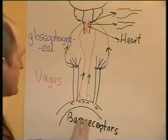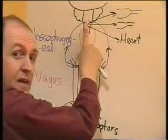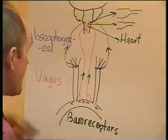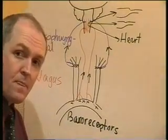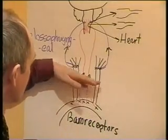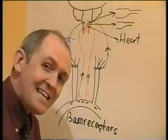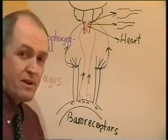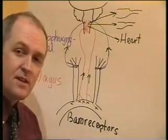When the blood pressure is high and there's a lot of impulses going to the brainstem, these impulses from the baroreceptors inhibit the sympathetic outflow from the brainstem. So the higher the pressure, the more impulses going up to the brainstem via the vagus and glossopharyngeal nerve, the less impulses leaving the brainstem to bring blood pressure up. And that makes sense — if the blood pressure is already high, you don't want it to go higher.